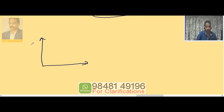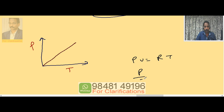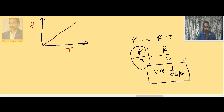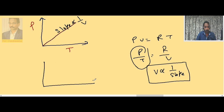If a graph is plotted P versus absolute temperature, it is again a line passing through the origin. The slope: from PV = RT, P/T = R/V, and P/T is y/x, so this is the slope. Volume is inversely proportional to slope.